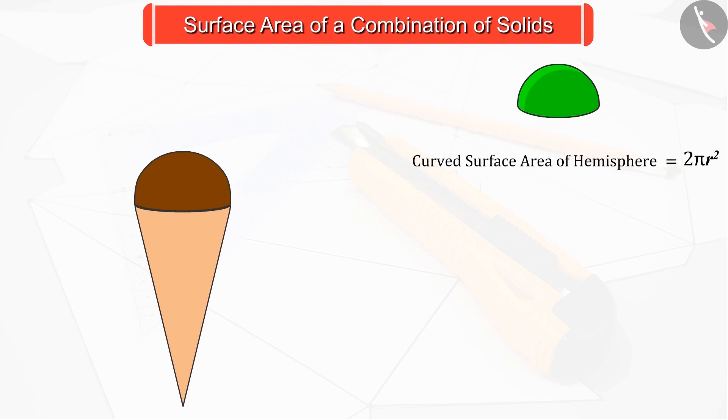We will add the curved surface area of a hemisphere, 2πr², and the curved surface area of a cone, πrl.